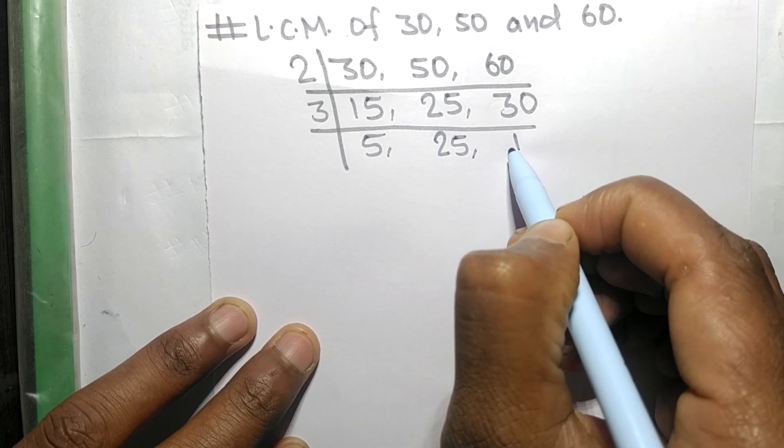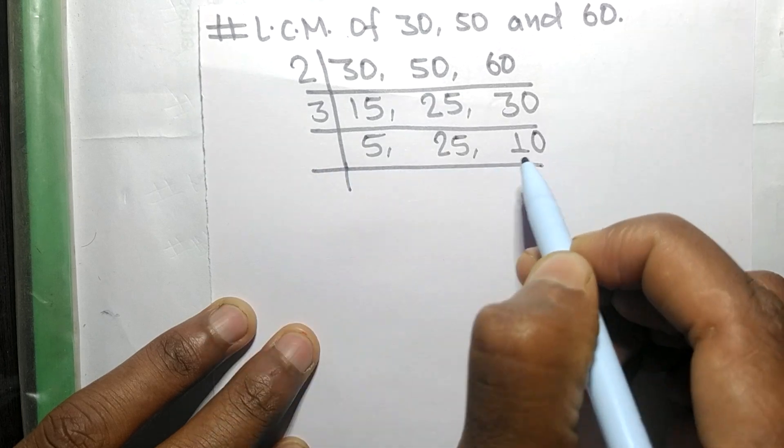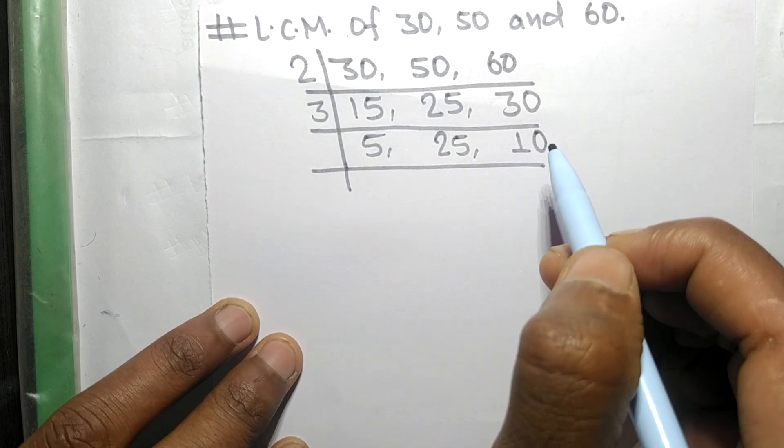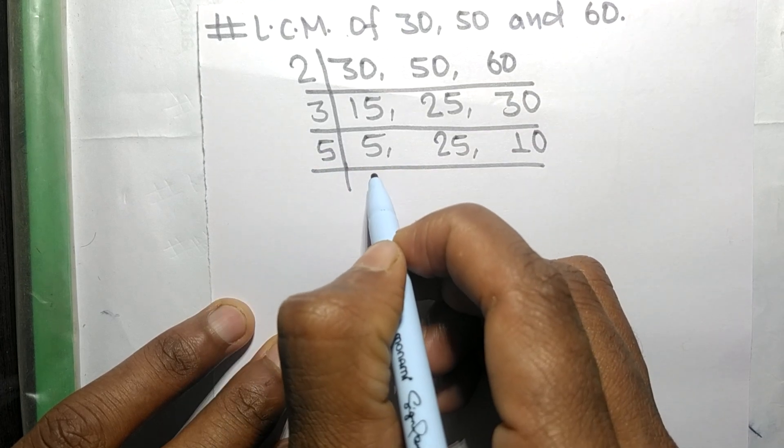So now these all numbers are exactly divisible by 5. So 5 times 1 mean 5, 5 times 5 mean 25, 5 times 2 mean 10.